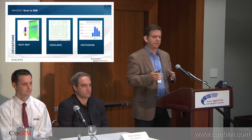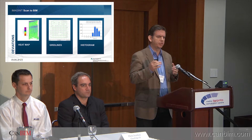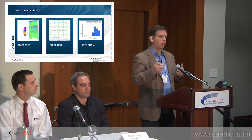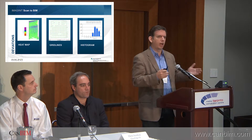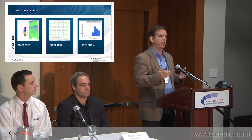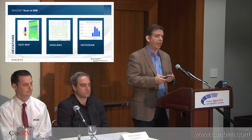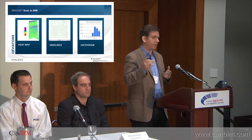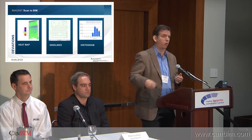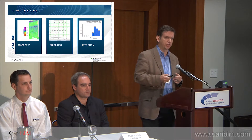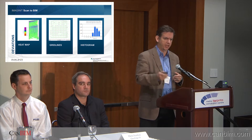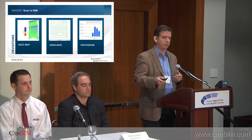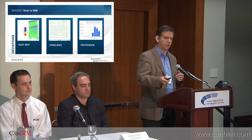Another thing we've spent a lot of time on is figuring out the best way for people to analyze and document where the model done in Revit deviates from the reality represented by the point cloud. We have heat map tools to visually see the discrepancies, grid-based tools similar to how a surveyor might walk the floor and measure how much it slopes, and statistical tools. All of these can be documented into your Revit model as a deliverable showing the amount of deviation.